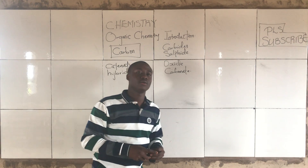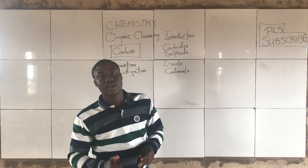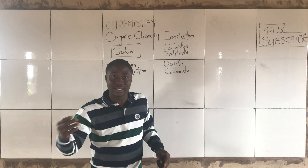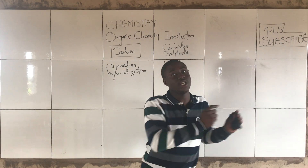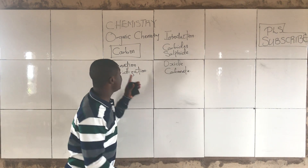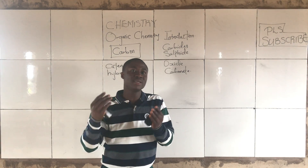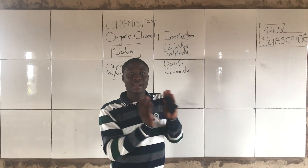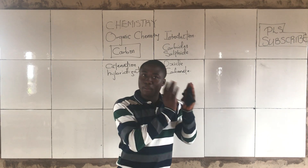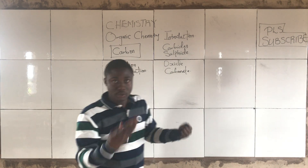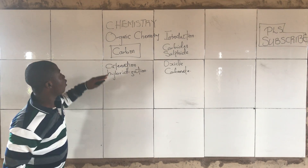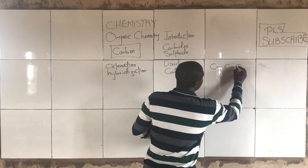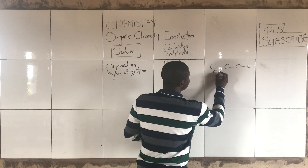What is catenation? Catenation can be defined as the ability of an element to form long chains. Carbon is one element that can catenate, so it means that it can form long chains, irrespective of the kind of bond — it can be double, multiple bonds, or even single bonds.